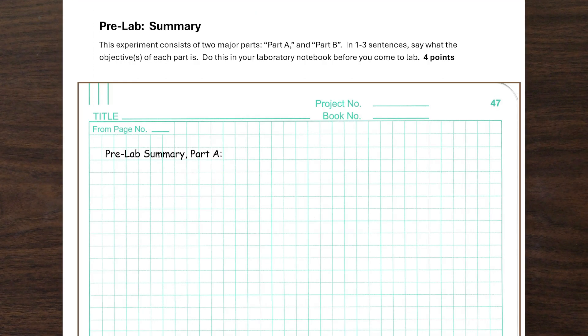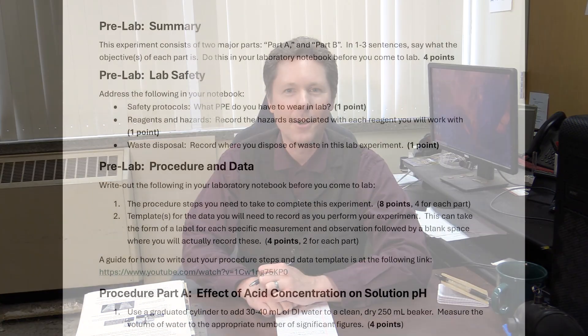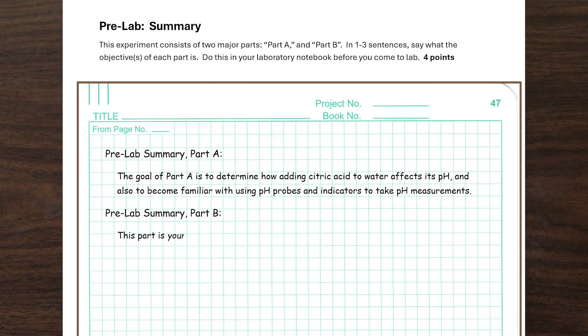Putting it all together, for part A we'd write something like: the goal of part A is to determine how adding citric acid to water affects its pH, and also to become familiar with using pH probes and indicators to take pH measurements. Now that we've gone over the goal for part A, as part of your pre-lab training exercise, you will have to determine for yourself what the goal of part B is.